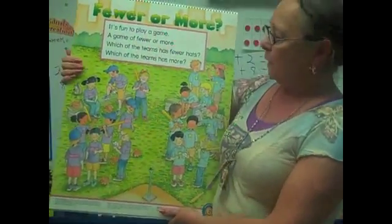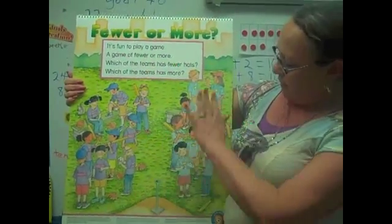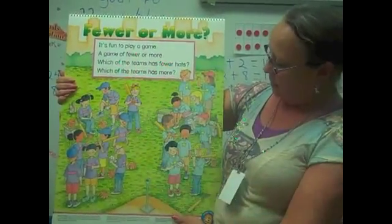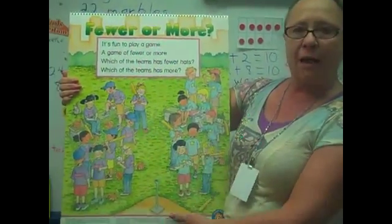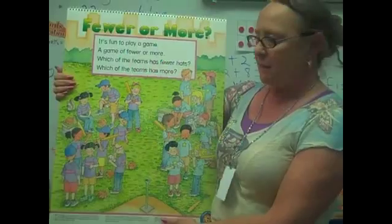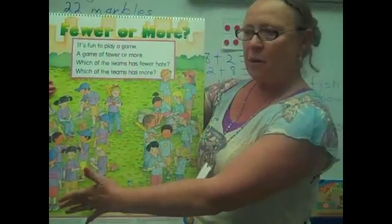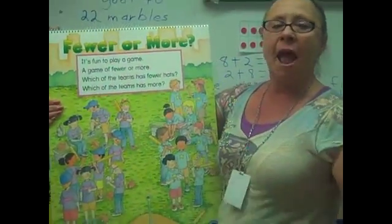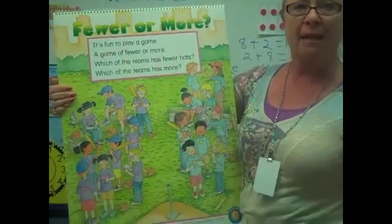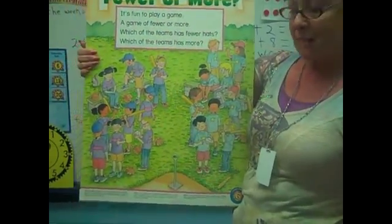We looked at the picture and I said to them, how many children are on this side? They said nine. I said, how many are on this side? They said nine. And I said, how can you make an addition story with that?